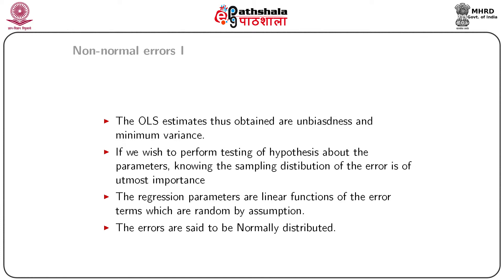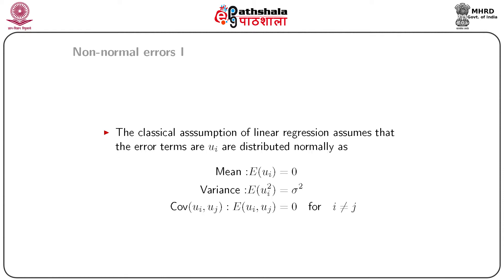An assumption about the sampling distribution of the error term is always useful when discussing the sampling distribution of the regression parameters. The errors are said to be normally distributed under normal situations. According to the classical assumption of linear regression, we assume the error terms Ui are distributed normally with mean zero — that is, expected value of Ui equals zero — and variance sigma squared for every error term, meaning the errors are homoscedastic.